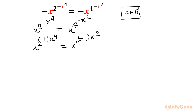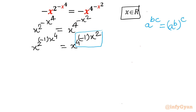Up to this point there is no issue. Now I will consider one exponent property which is very useful for our problem: a^(bc) can be written as (a^b)^c. I can see it clearly. So I will consider x^2 raised to the power of negative 1, then raised to the power of x^4.